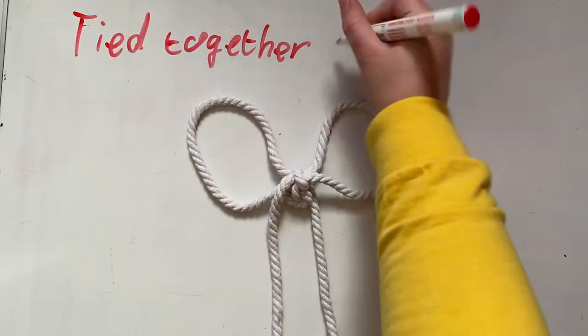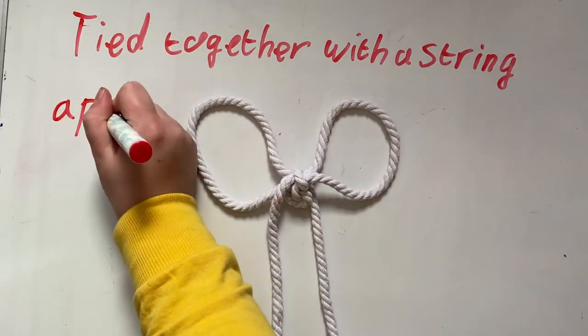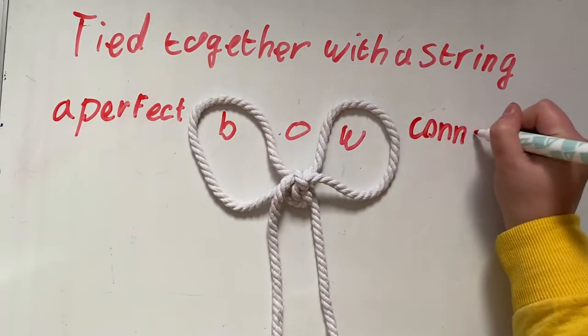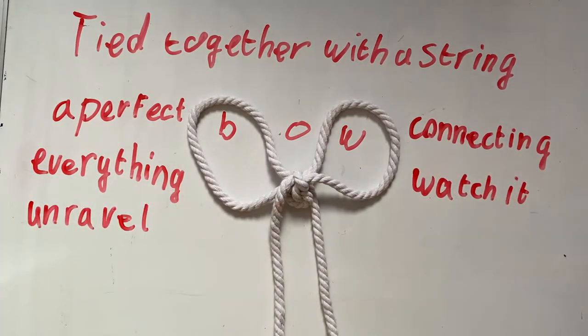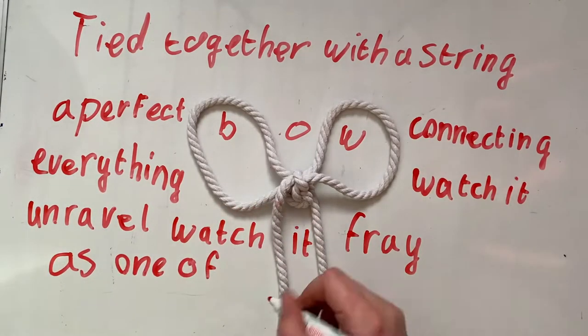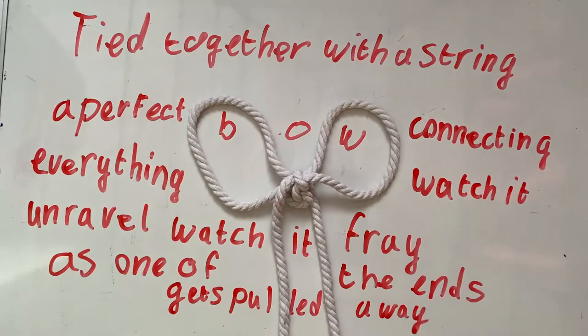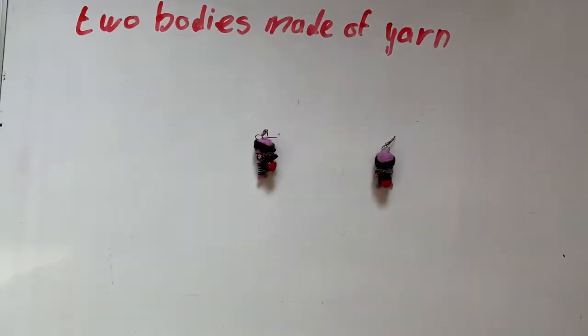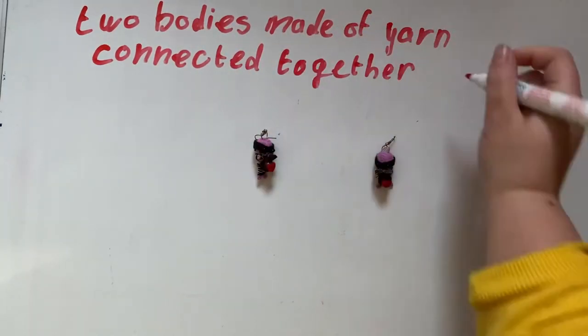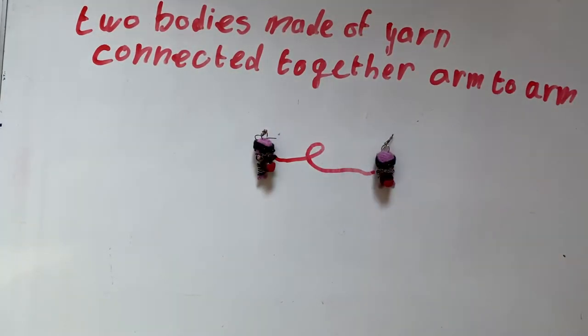Tied together with a string, a perfect bow connecting everything. Watch it unravel, watch it fray as one of the ends gets pulled away. Two bodies made of yarn connected together arm to arm.